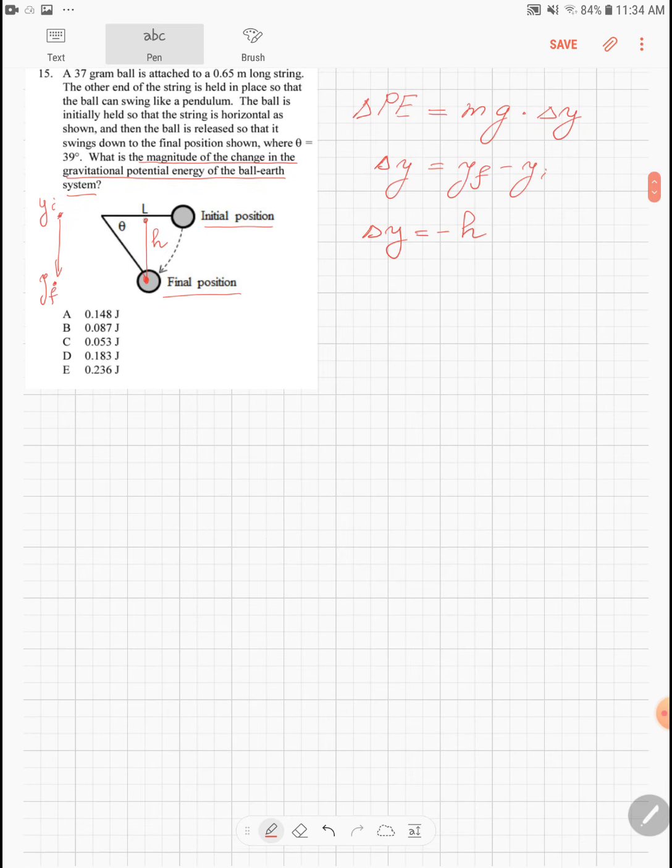h is the opposite side to the angle theta, while I know that the hypotenuse of this right triangle over here is l. And this is why h is l times sine of the angle theta.